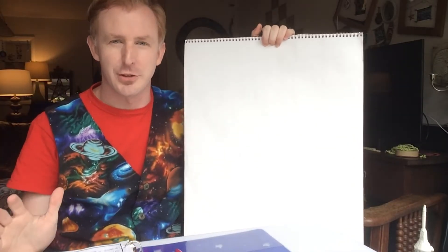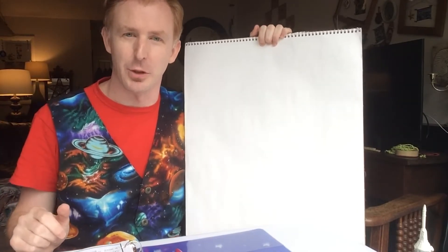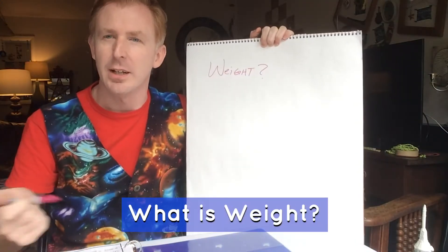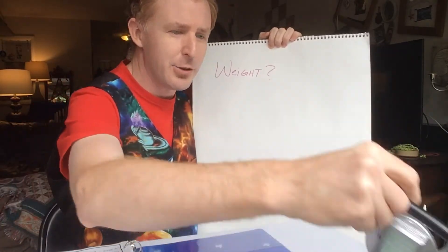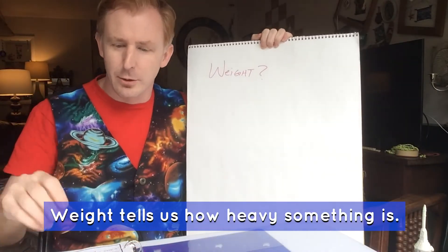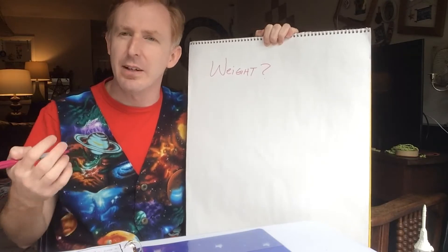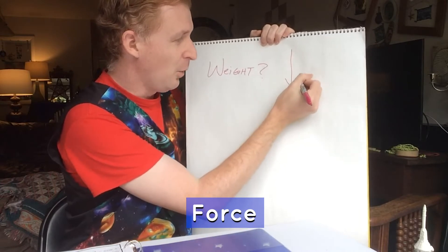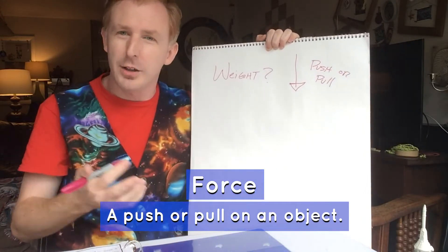Before we get started on our solar system journey, let's go over a few things dealing with math and the calculations we're going to be doing for gravity. First, what is weight? On Earth we use things like scales — here's a kitchen scale and here is a scale to measure luggage when traveling via airplane. That weight tells us how heavy something is. The heaviness we feel when we stand on a bathroom scale is a force, and a force is a push or a pull on an object.